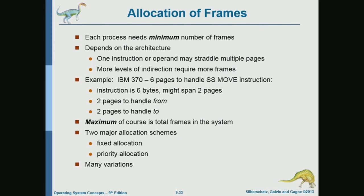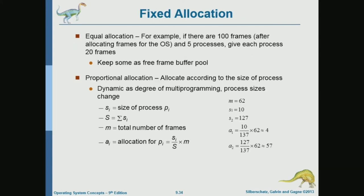That is why the number of pages a single instruction can access depends on the architecture, and you must give each process at least this number of frames. If one instruction can access six pages in a given architecture, you cannot give a process fewer than six pages. Now, how do we do the allocation? The first scheme is fixed allocation — specifically, equal allocation.